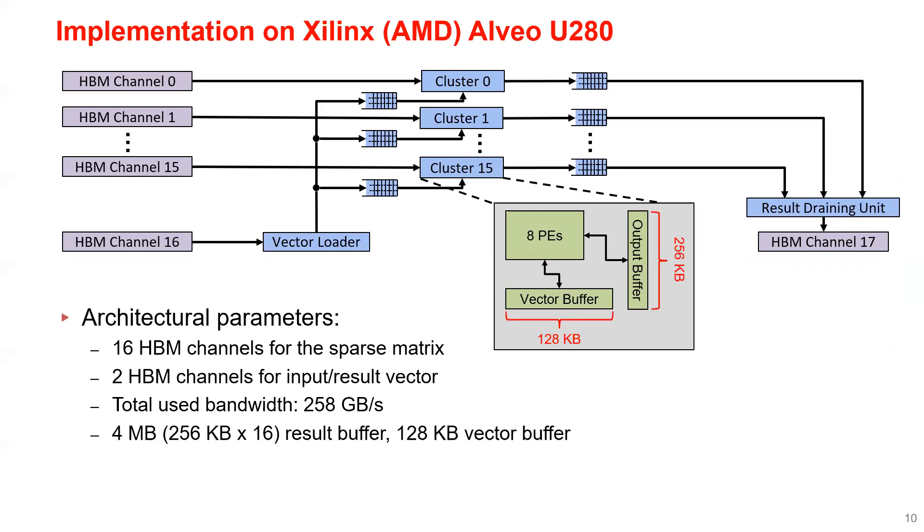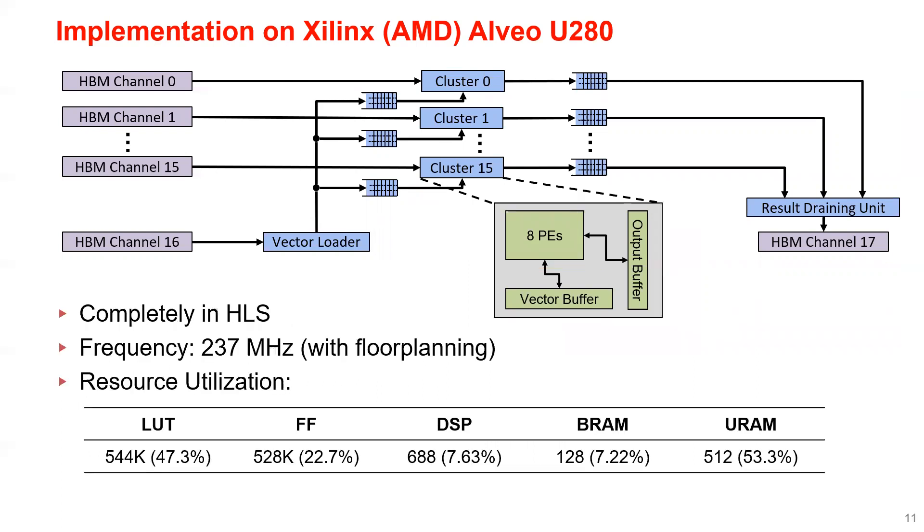We have a 4 megabyte result buffer in total, which is given by 256 kilobytes per cluster times 16 clusters, and we have a 128 kilobytes vector buffer. Finally, we have 8 PEs per cluster and 128 PEs in total.